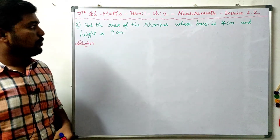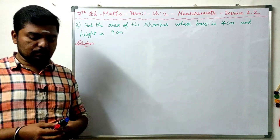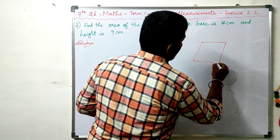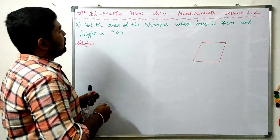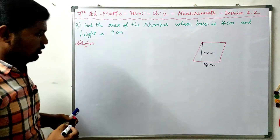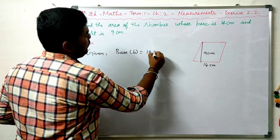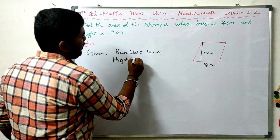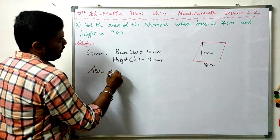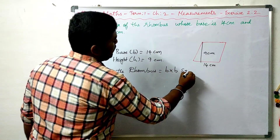Question number two: find the area of the rhombus whose base is 14 cm and height is 9 cm. Since base and height are given, we use the formula B into H. Given data: base B = 14 cm, height H = 9 cm. Area of the rhombus = B into H square units.